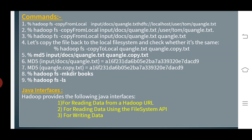Coming to the next concept, that is the Java interface in Hadoop. Hadoop provides the following Java interfaces. The first one is for reading data from a Hadoop URL. The second one is for reading data by using the System Application Programming Interface. The third one is for writing data. These are the concepts included in the Java interface. Hadoop provides these three Java interfaces. We will next discuss the further topic, which is the data flow of file read and data flow of file write.